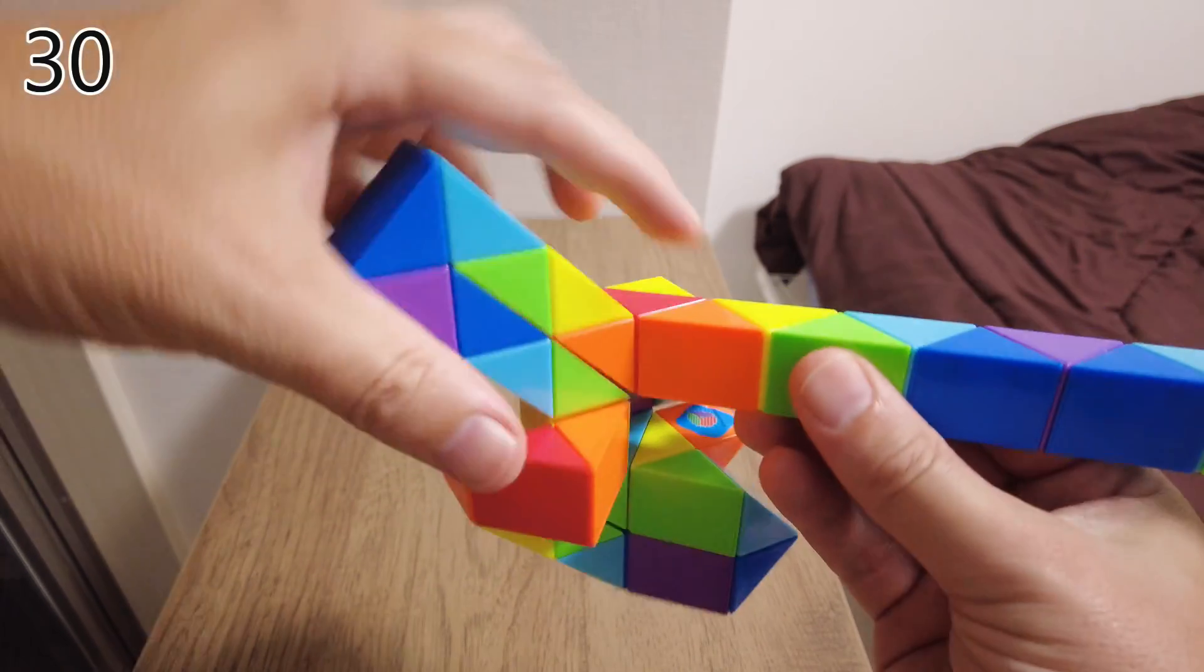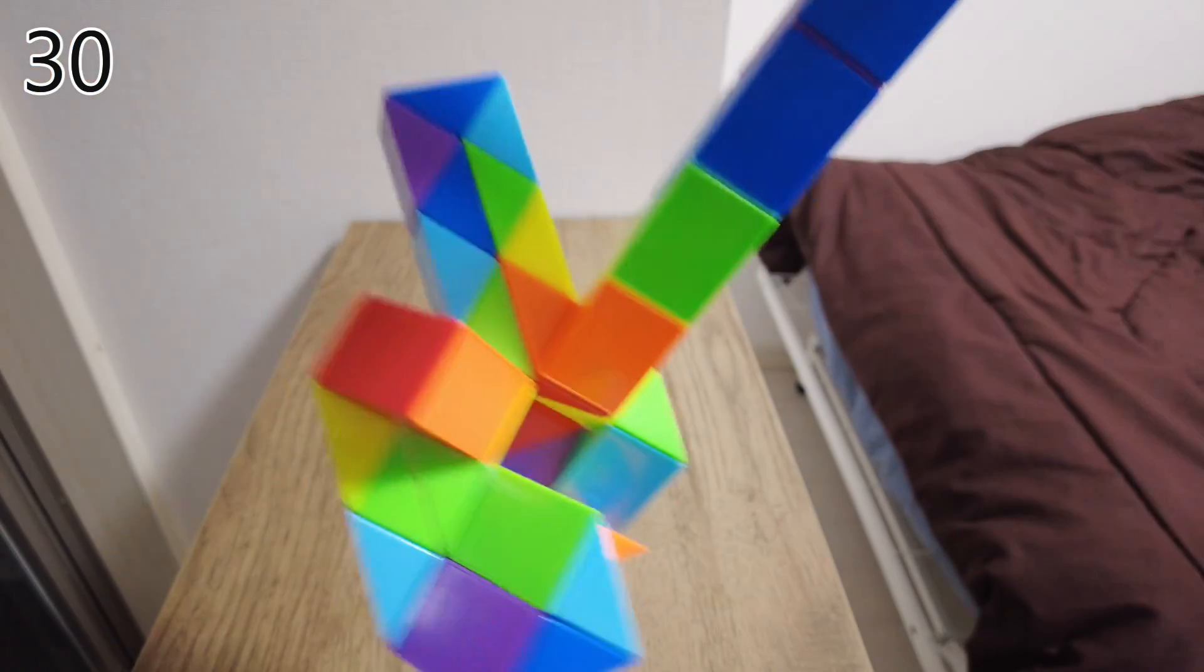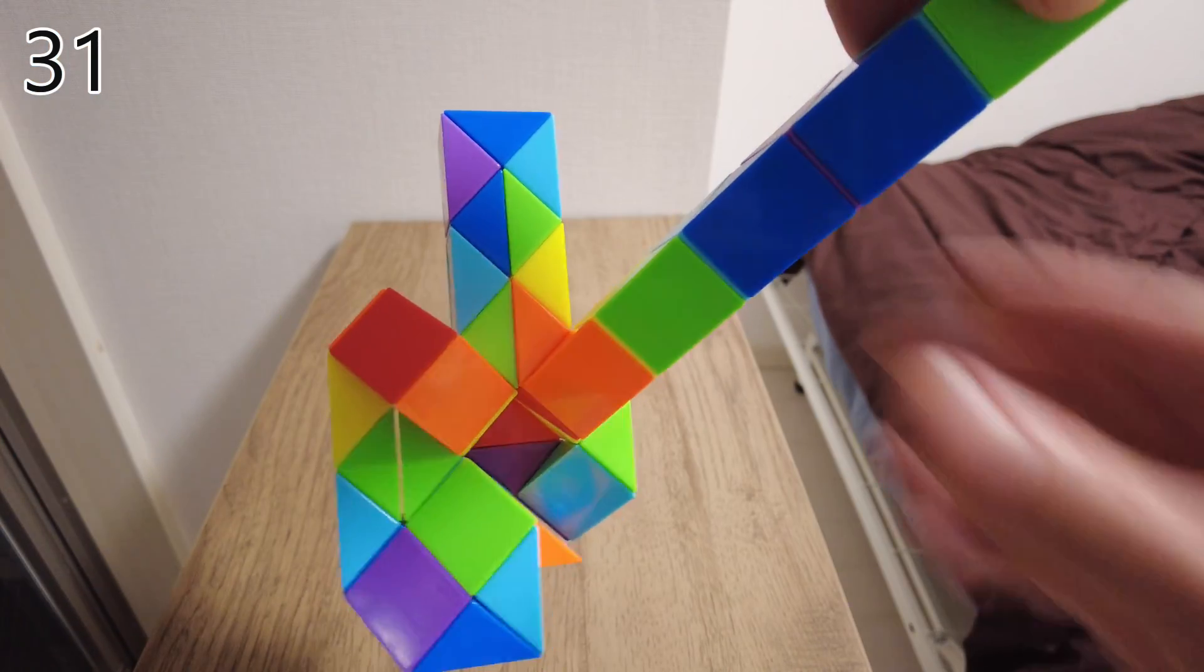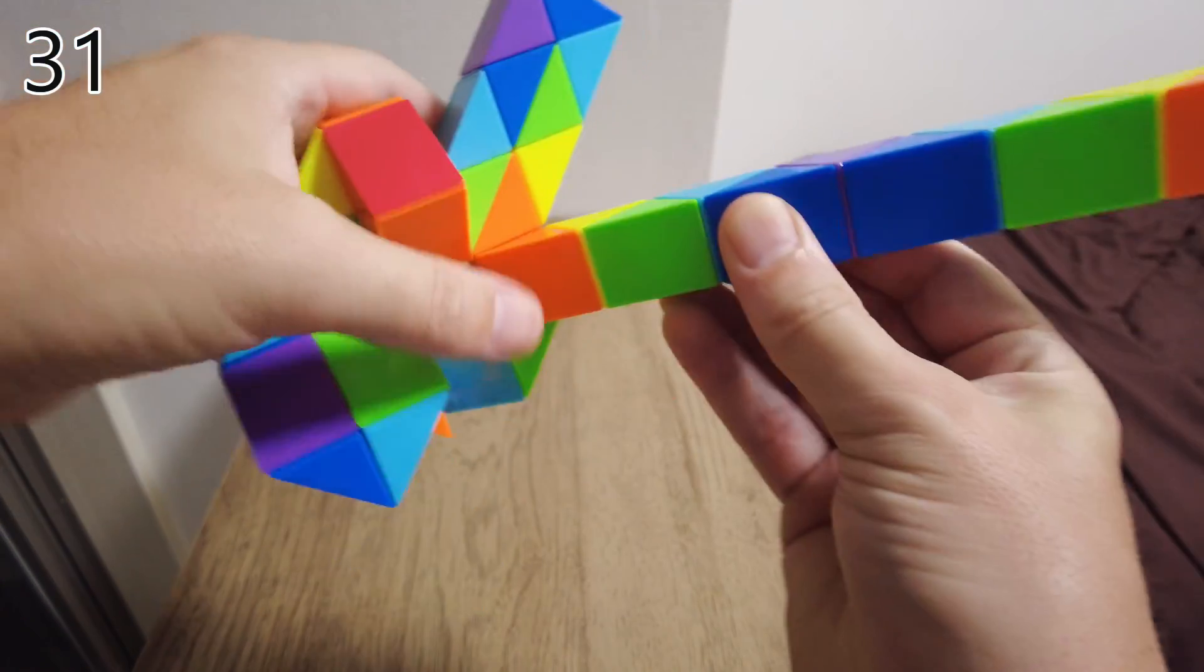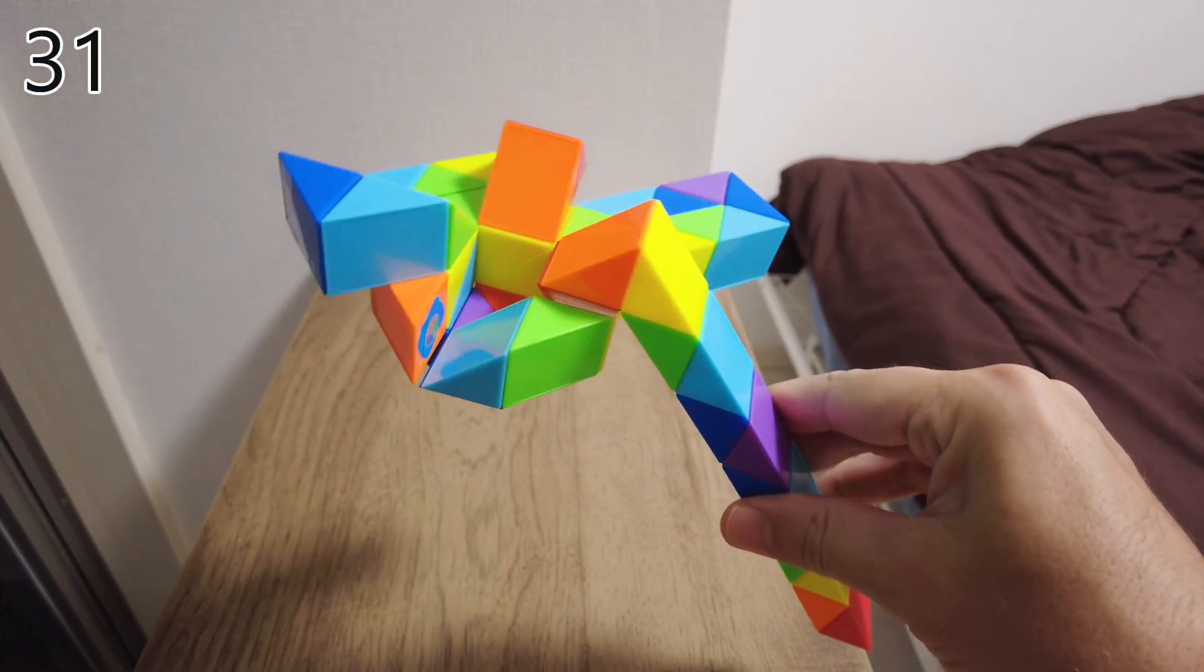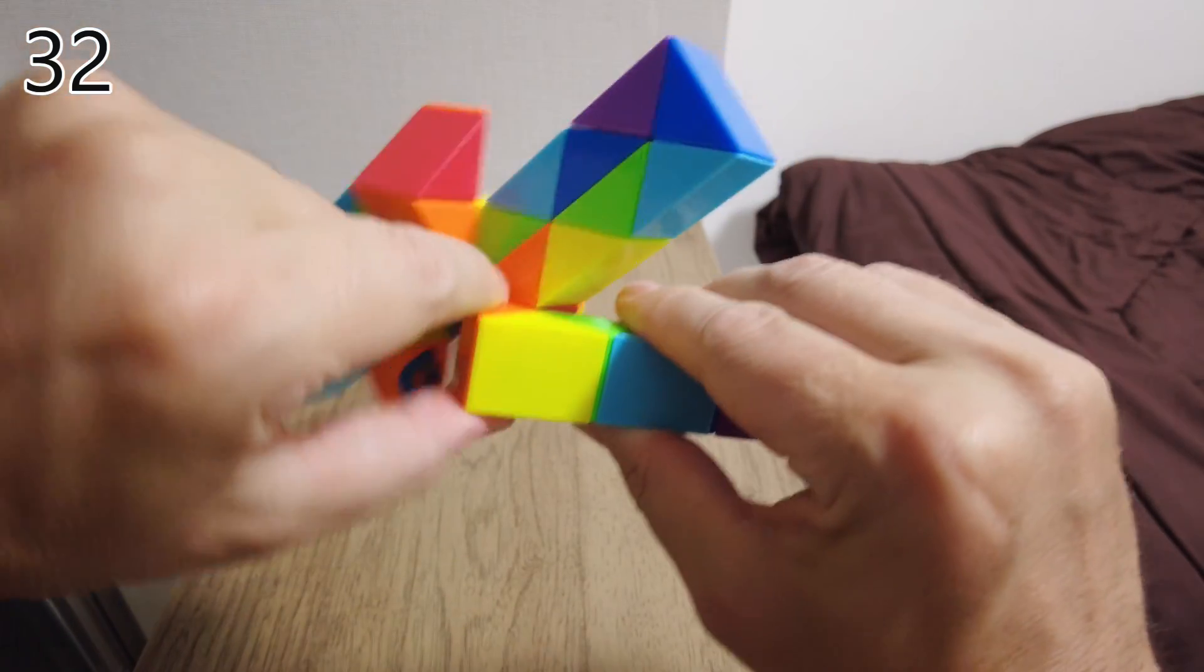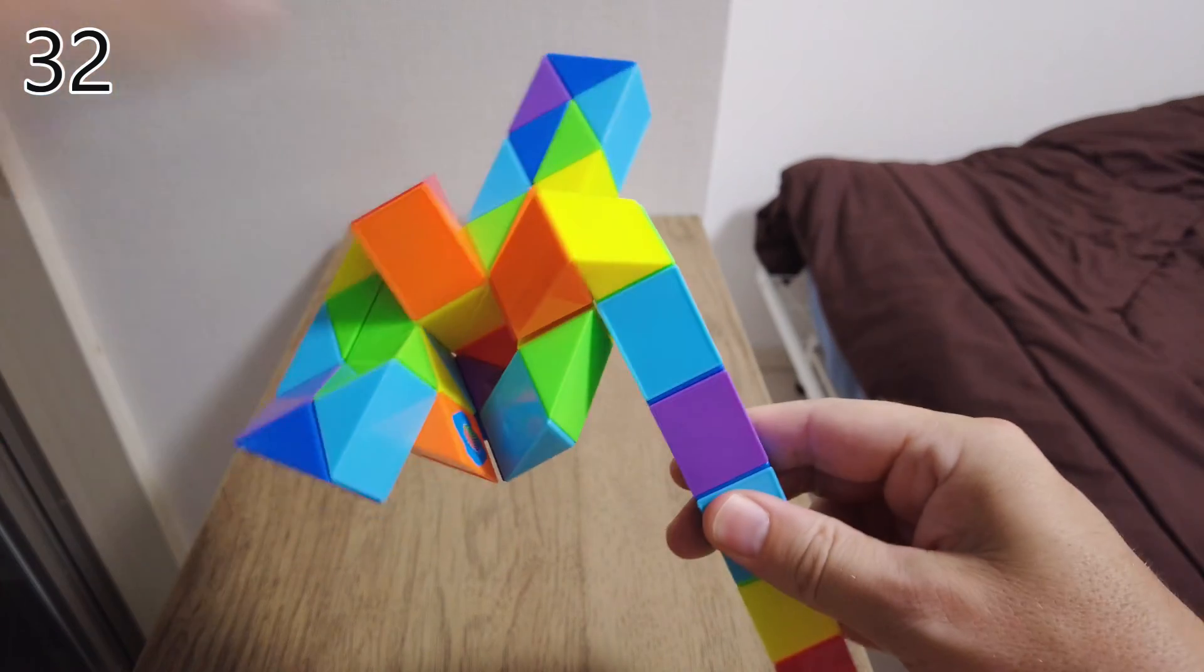Now swing this here, swing the arm up. And then here, two clicks down. One, two. Here, bend the arm one click, like that.